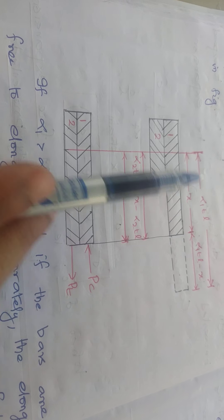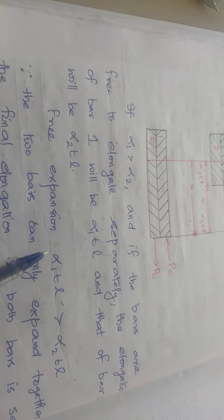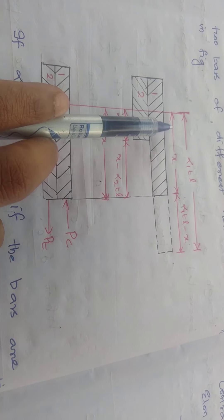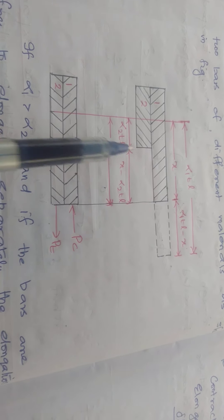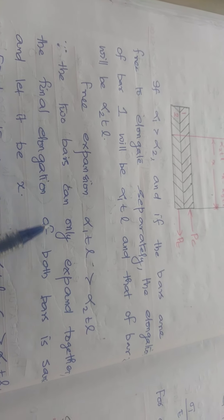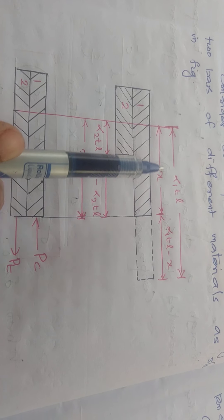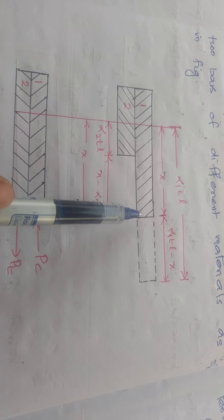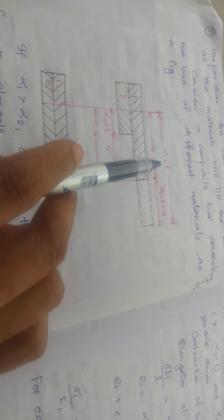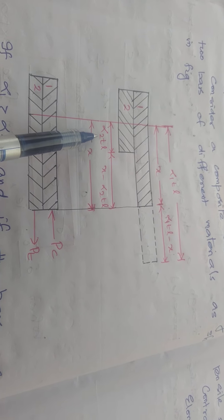Since alpha 1 × T × L is greater than alpha 2 × T × L, and since the two bars can only expand together, the final elongation of both bars will be the same. Let this final elongation be equal to x. The final extension x should be less than alpha 1 × T × L and greater than alpha 2 × T × L.